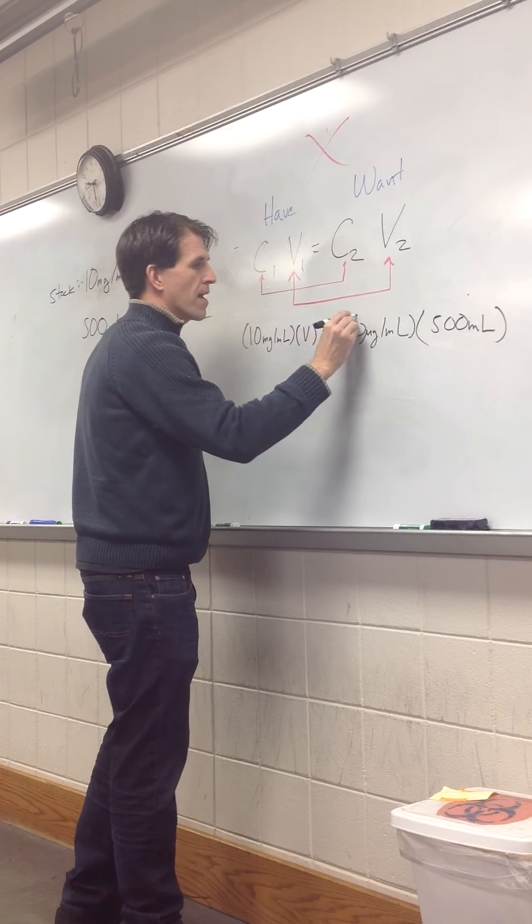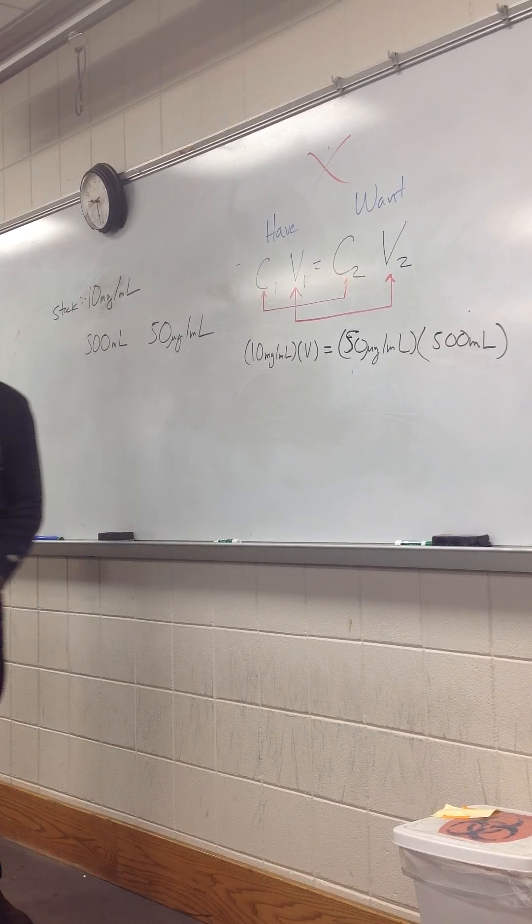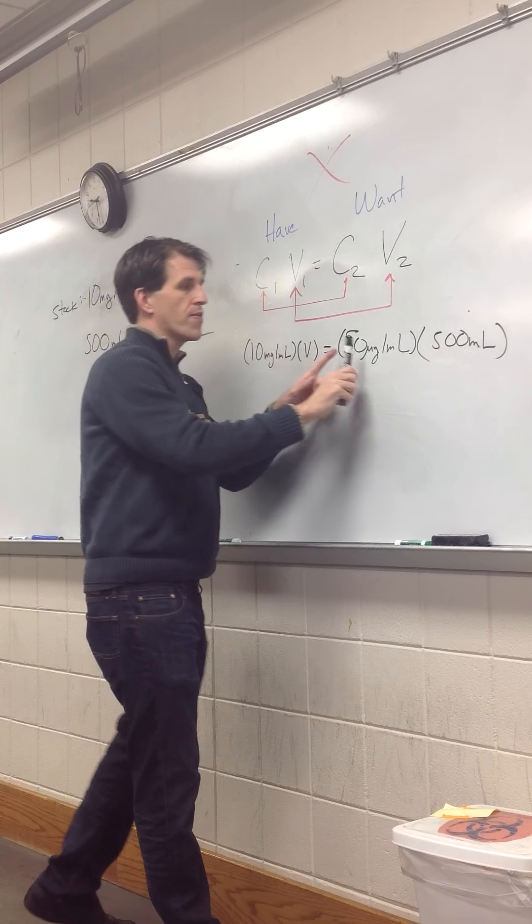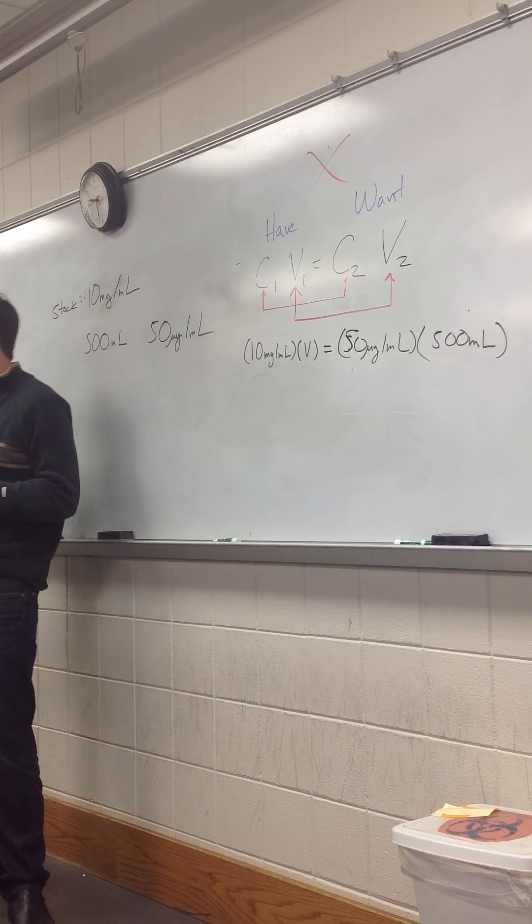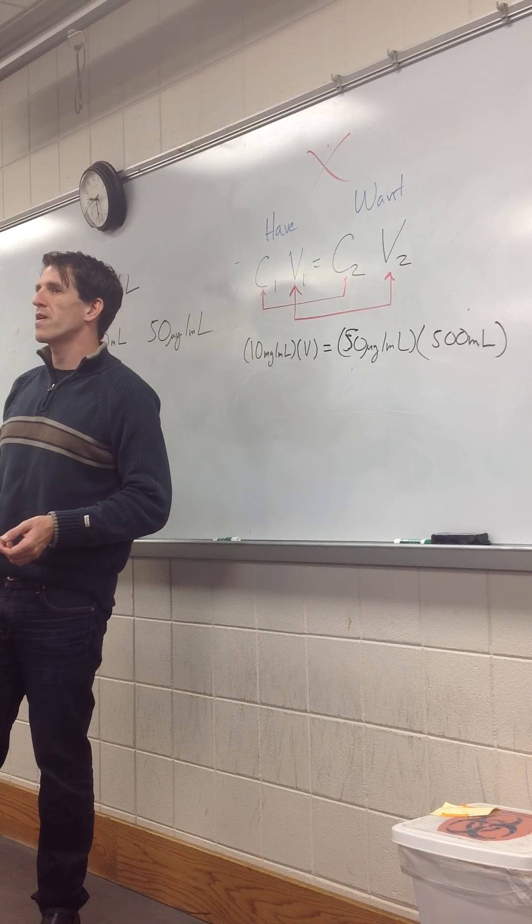Now, what's the problem that we have all probably seen here? Your unit agreement is off. We have to convert. Either we convert this one or this one. And I'll just tell you from doing this, converting this one is a lot easier because we get a lot of zeros. Then we can start slashing those zeros pretty soon, and it makes a lot more sense.